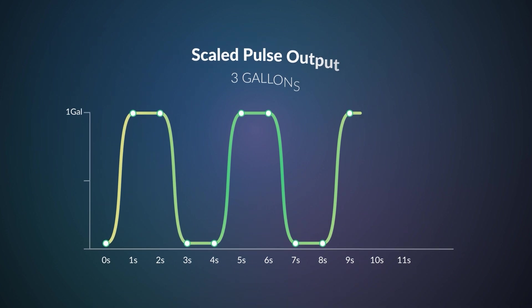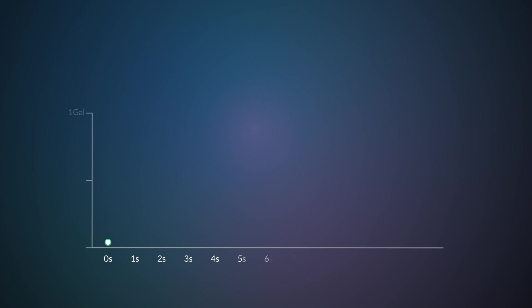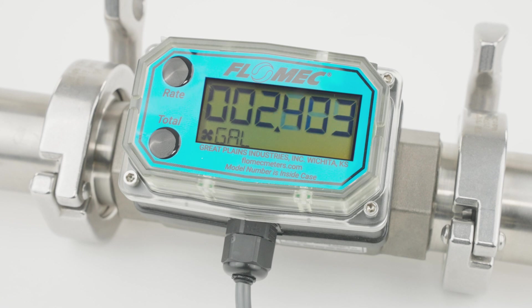This maintains compatibility with PLCs that have limited input configurability. Pulse and scaled pulse outputs are well suited for measuring specified volumes of fluid, since the meter will output discrete pulses for each unit of volume measured.